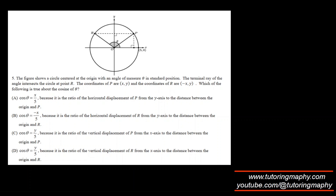Similar setup here — we need to find cos theta. Theta is an angle ending at R, so we know it's adjacent over hypotenuse. Hypotenuse is clearly 5, because that is the radius. The x-value for the terminal ray ending at R: coordinates of P are x, y, and R are negative x, y, so this has to be negative x. So cos theta is adjacent, which is negative x, over hypotenuse, which is 5 — giving negative x over 5, which is option B.